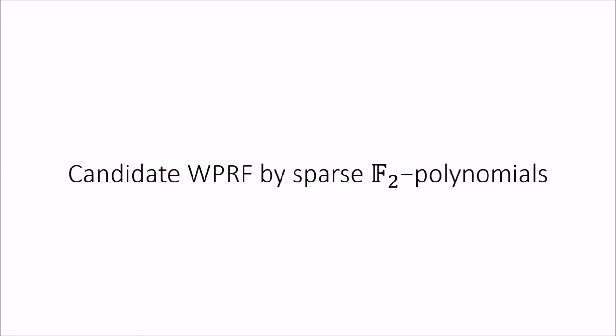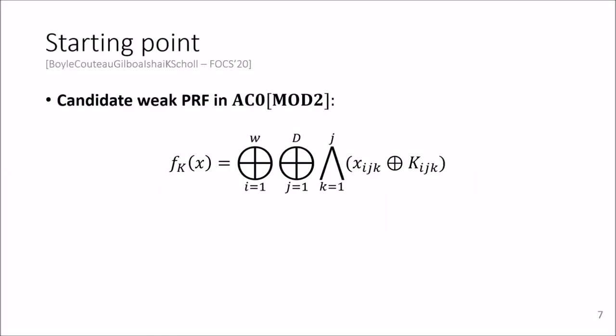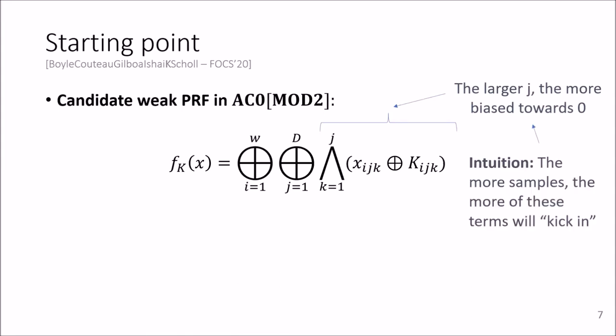So let's start with the candidate weak PRF computed by sparse F2 polynomials. The starting point is the previous candidate in AC0 mod 2. As you can see here, the candidate is an XOR of N terms, where the N terms are increasingly biased towards 0.